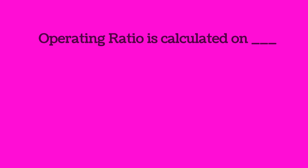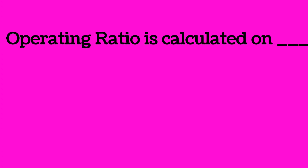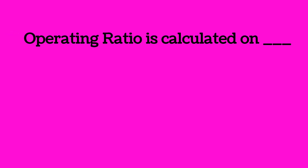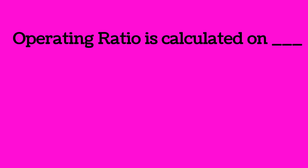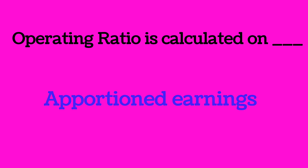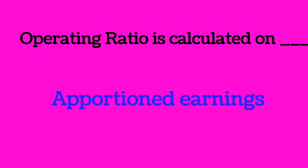Next question: operating ratio — a very very important question. Operating ratio is a ratio of earnings and expenditure. It is calculated on apportioned earnings.